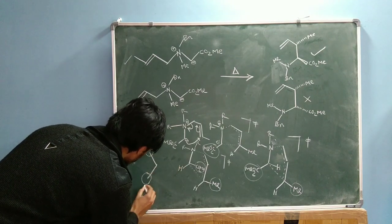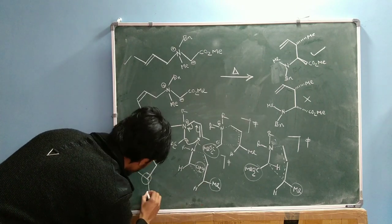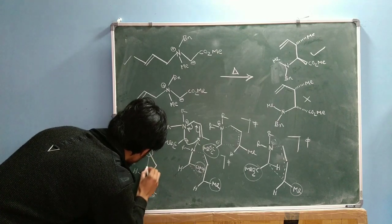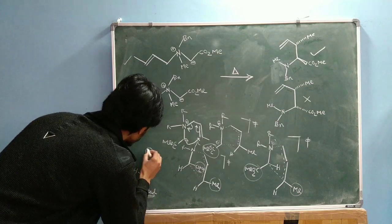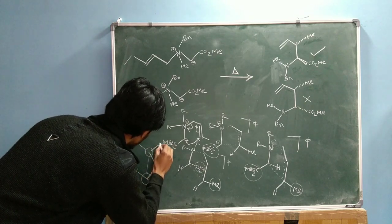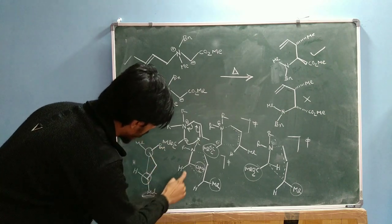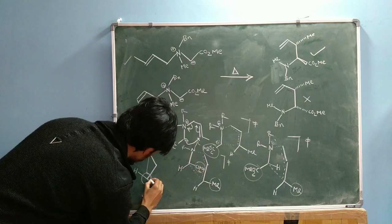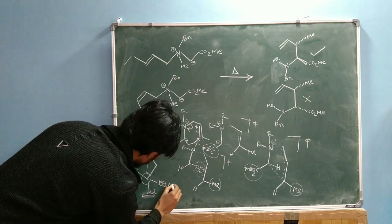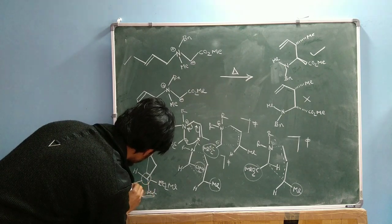Looking at this in a Newman projection formula will make it clearer. In the Newman projection of the first transition state, on the front carbon I put the methyl group and hydrogen — these are the two groups on nitrogen, one benzyl and one methyl — and on the back carbon you have the CO₂Me (ester) and hydrogen arranged like this.